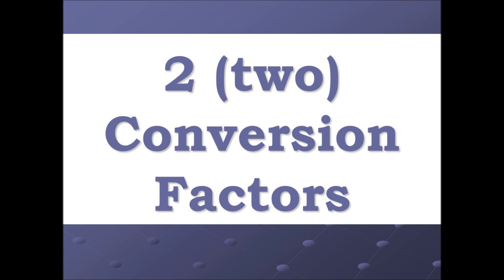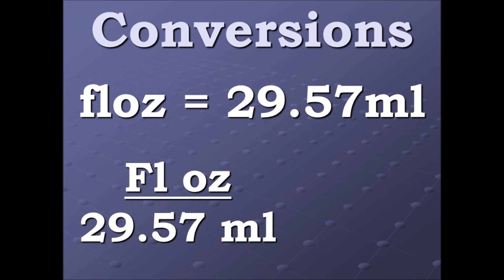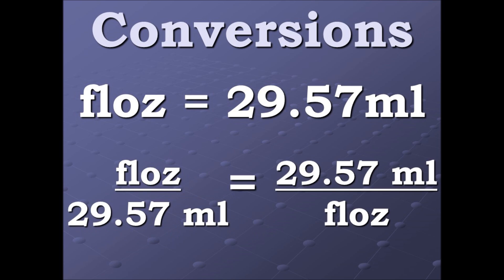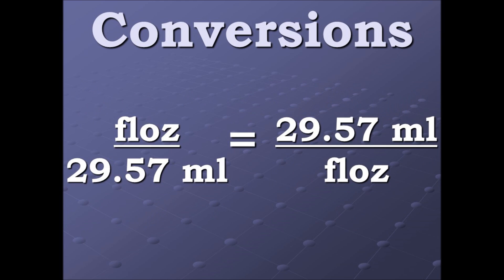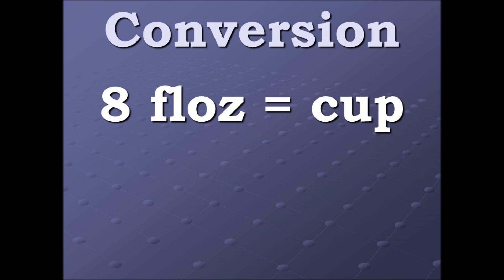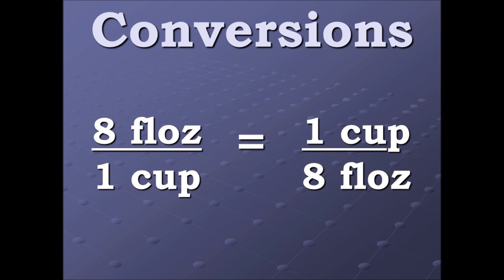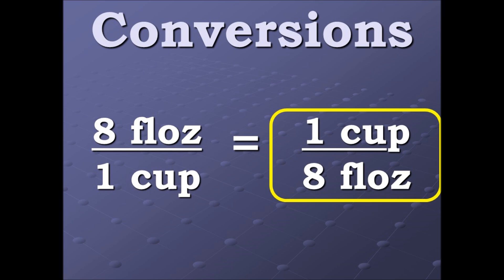Again we need two conversion factors. The first: one fluid ounce equals 29.57 milliliters. We're going to put that into a ratio and flip it to its inverse. We're going to use the one on the left because we're converting fluid ounces first. For the next conversion factor, eight fluid ounces equals one cup — we put that into a ratio and make it equal to its inverse. We'll use the right-hand side because we're converting to cups and need that one on top.